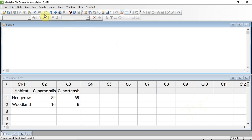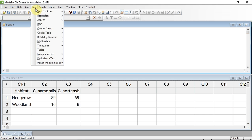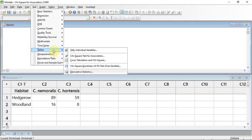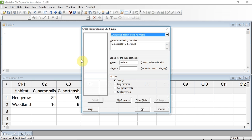We're going to track up to Stat and click. We're going to go down to Tables, and a sub-menu opens. We're going to use the cross-tabulation and chi-square, so we'll track down to that and click. A window opens.